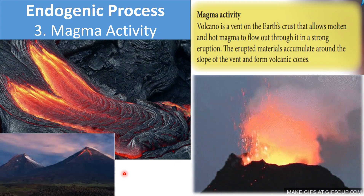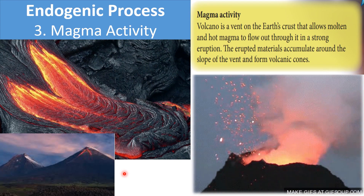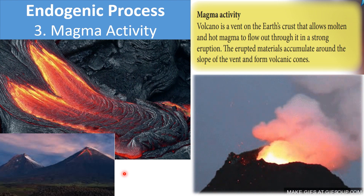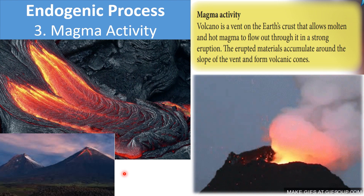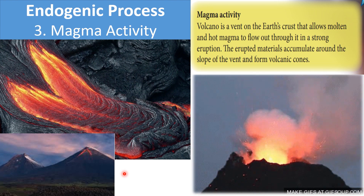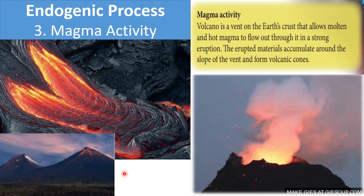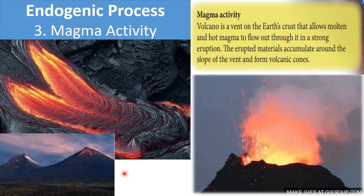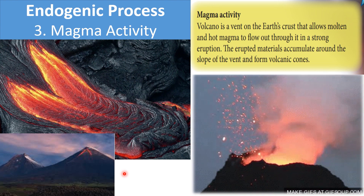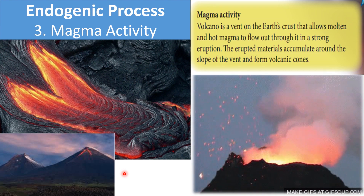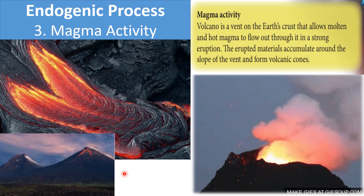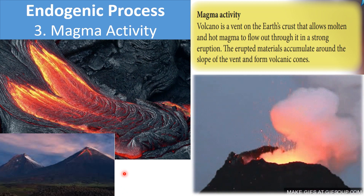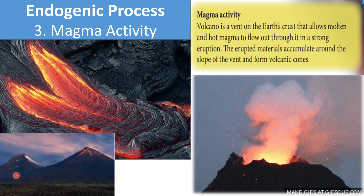The third example of endogenic process is magma activity. A volcano is a vent on the Earth's crust that allows molten and hot magma to flow out through it. In a strong eruption, the erupted materials accumulate around the slope of the vent and form volcanic cones.